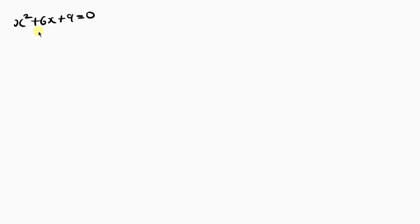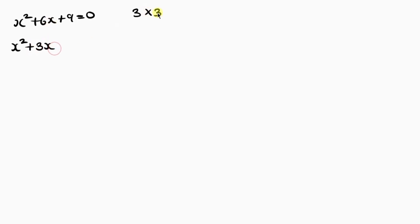Can we factorize s²+6s+9 = 0? What are the factors of 9? 3 times 3 gives 9, and 3 plus 3 gives 6, which matches the middle term. So the factors are good. We write s²+3s+3s+9 = 0. s is common in the first two terms giving s(s+3), and 3 is common in the last two giving 3(s+3).